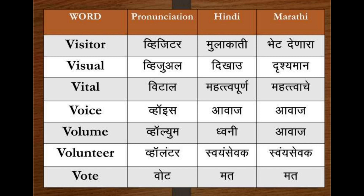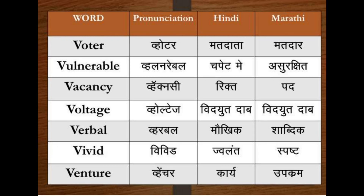Vote — Mat, Mat. Voter — Matdata, Matdar. Vulnerable — Chapet mein, Avasarakshit. Vacancy — Rikt, Perth. Voltage — Viddhud-daab, Viddhud-daab. Verbal — Maukhik, Shabdik. Vivid — Jvalant, Spasht. Venture — Karya, Upakram.